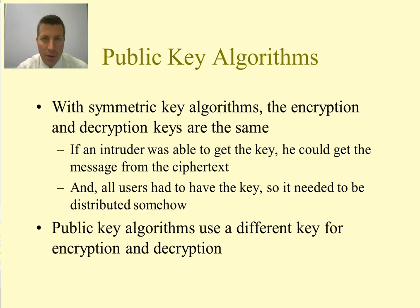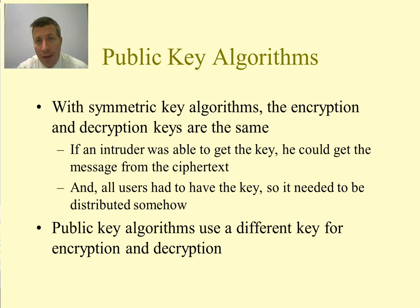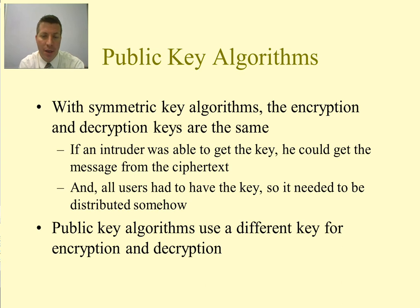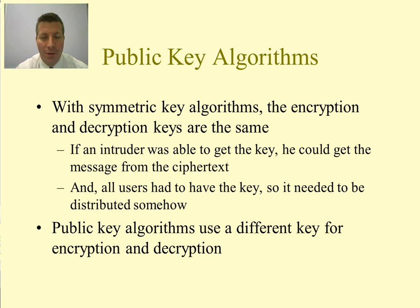If an intruder was able to get the key from either the sender or receiver, they would be able to decrypt the ciphertext and get the plaintext back out. In addition, all users who wanted to communicate on the network had to have the same key, so it needed to be distributed — a tough problem of how to distribute a symmetric key only to the people we want to have it.